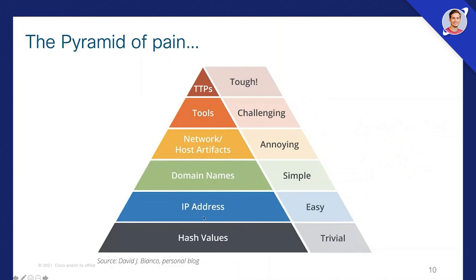For a hacker, it is the most trivial thing ever if their malware file is found by security systems and that file hash is added to a block list. It literally takes one click of a button — a minor change in their code — and the file hash will be different. That's what we call polymorphic malware: malware that keeps changing so it's difficult to detect. Similarly, IP addresses and domain names are easy to change — they can generate new domain names and host their content on a different IP address.